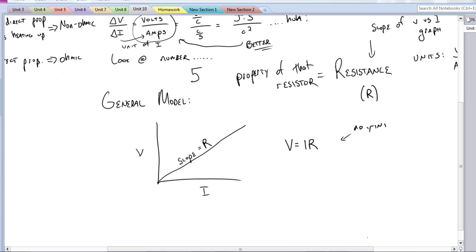And you'll notice that there is no y-intercept in this again, because as current goes to zero, that means you have no flow of charge. And if you don't have any flow of charge, you're not going to have any voltage or energy going on in there. So V equals IR is our new equation. This is actually called Ohm's Law.